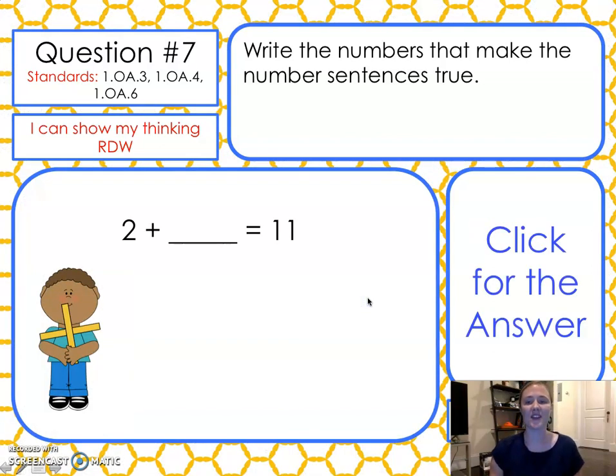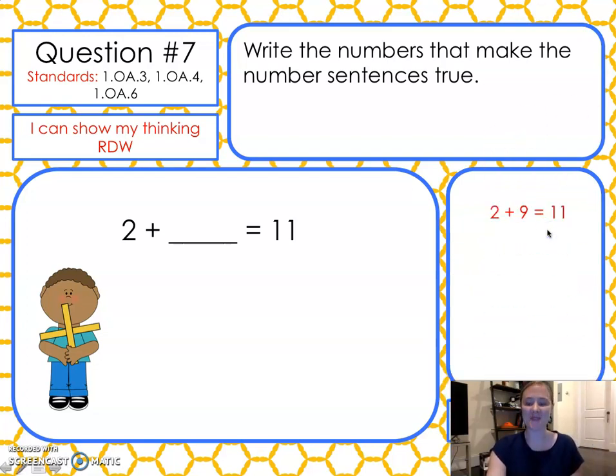Question number seven. Write the numbers that make the number sentences true. Two and... make eleven. Hmm, if I know that 2 and 8 make 10, then 2 and make 11. I'm going to show you the answer now. If you need more time, pause. 2 and 9 make 11.